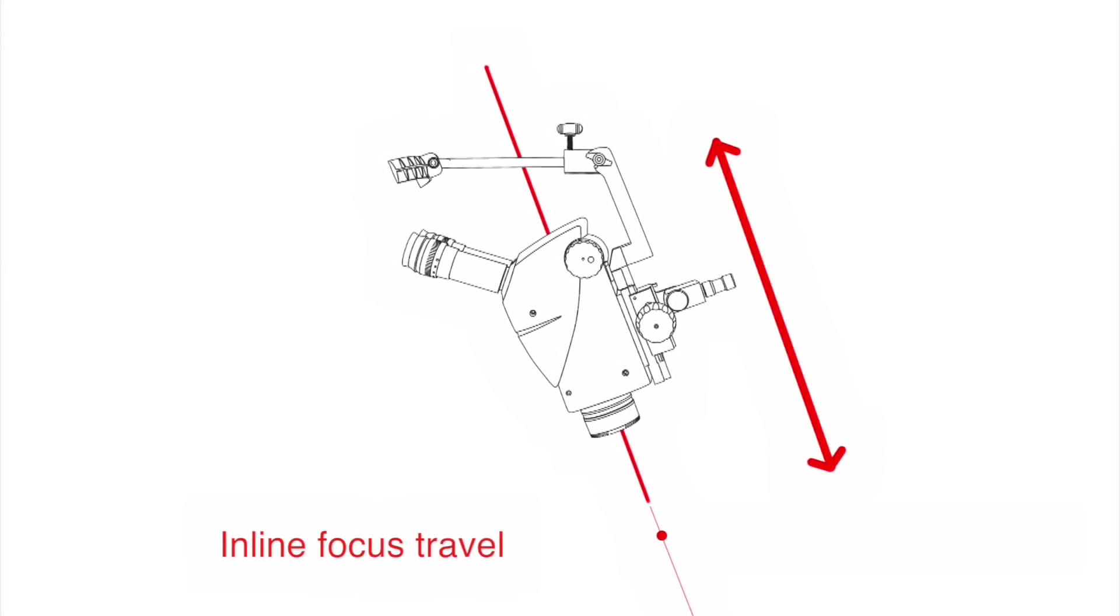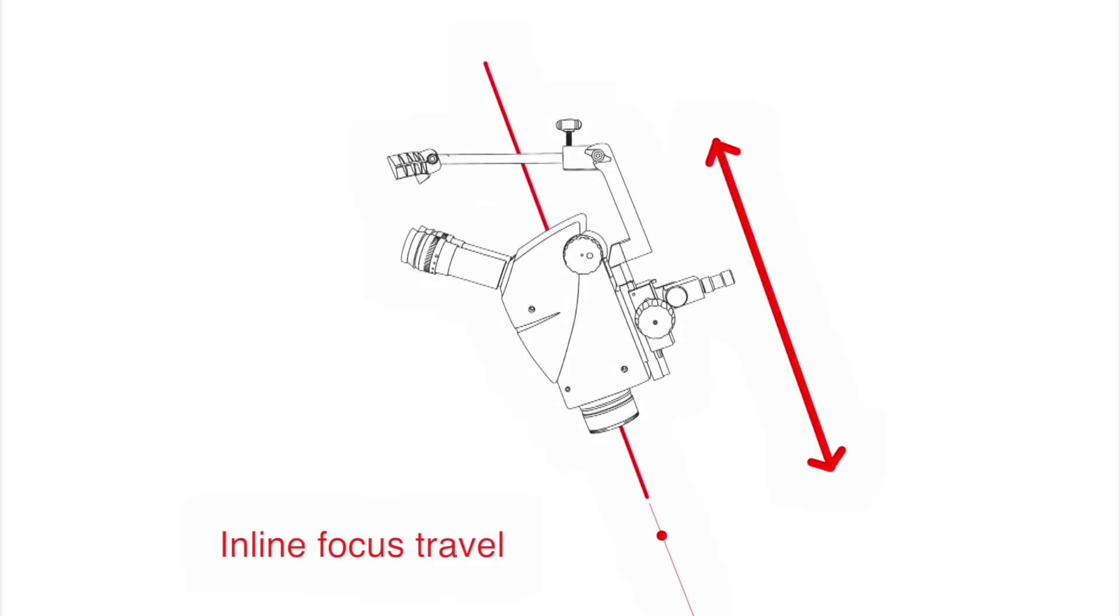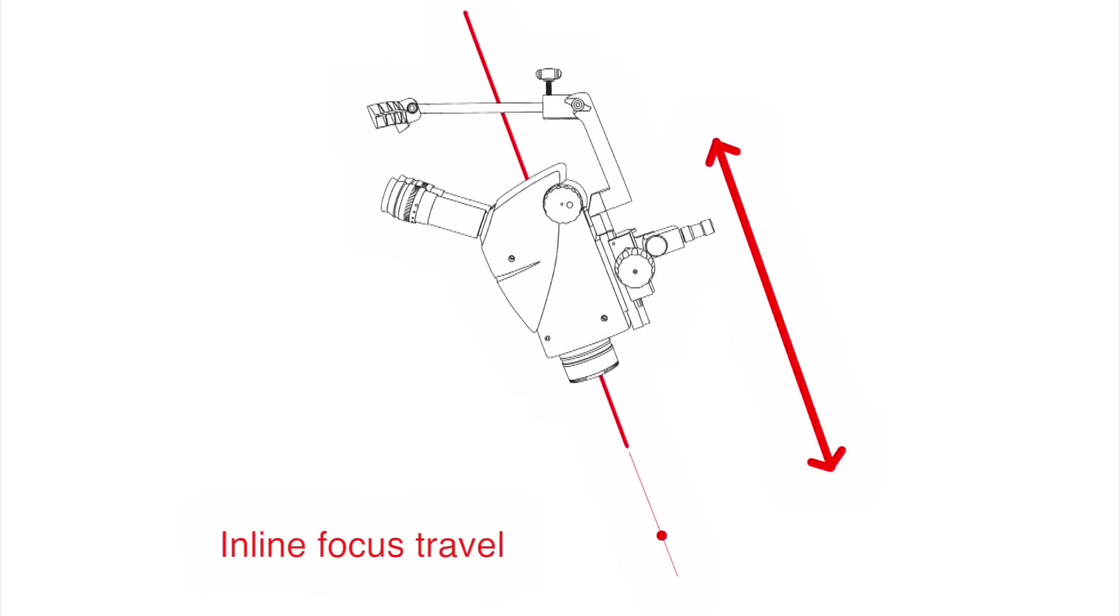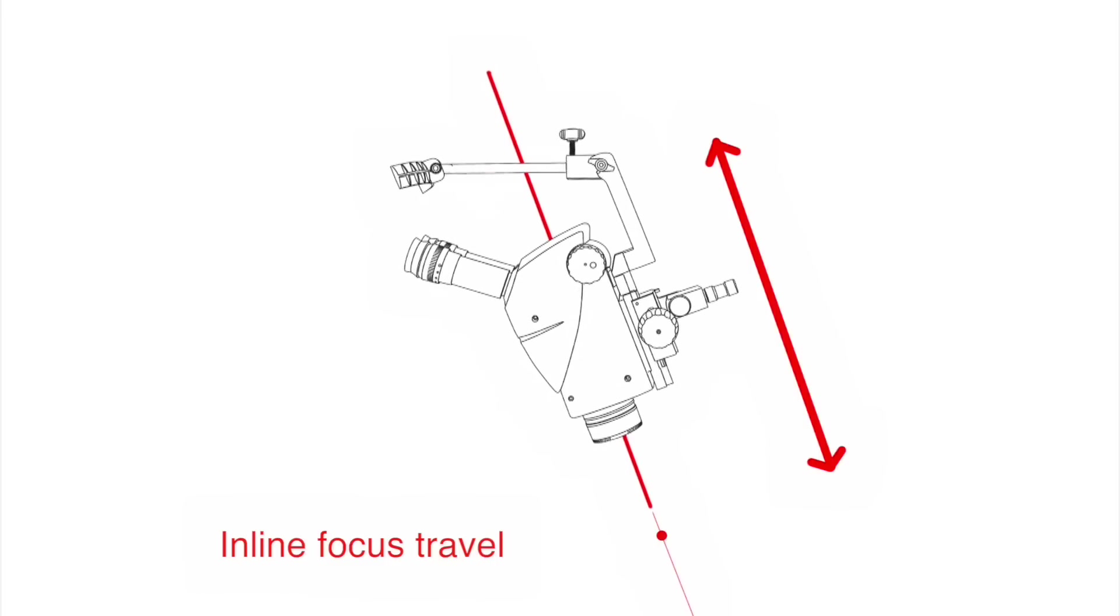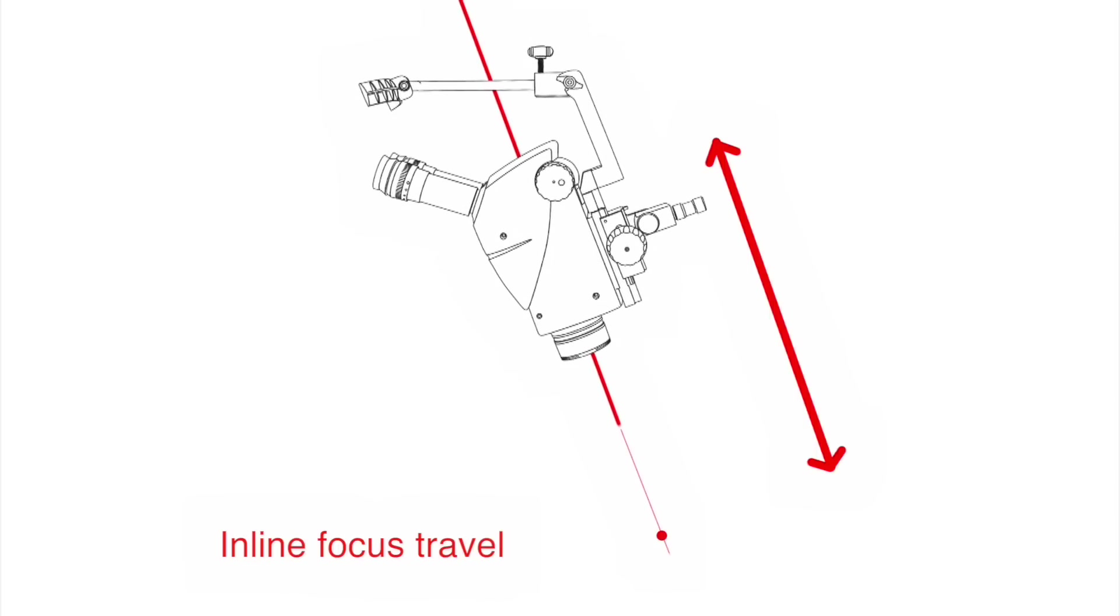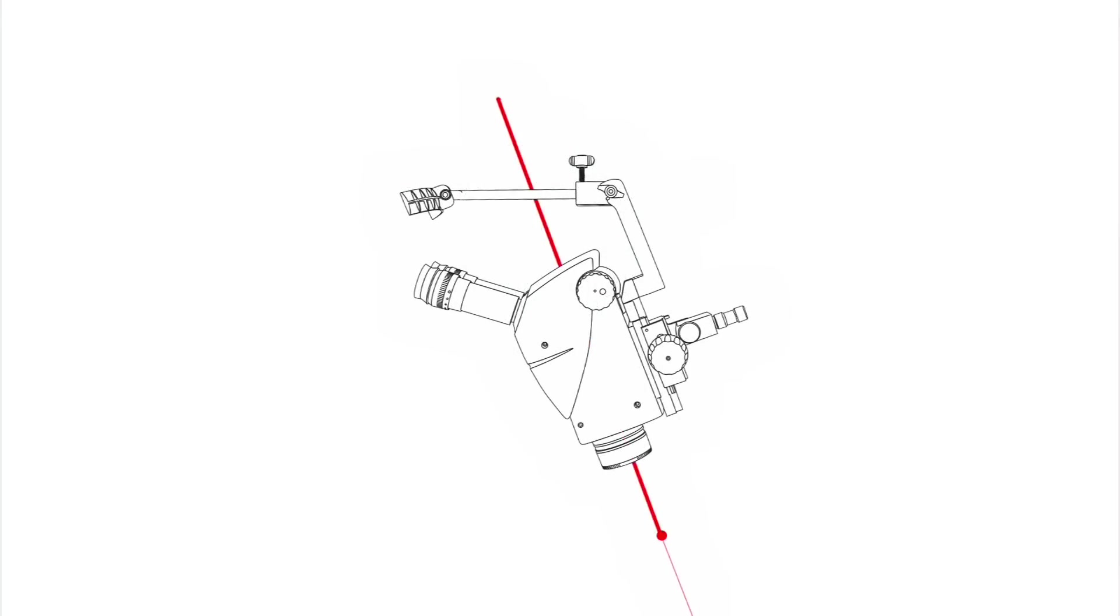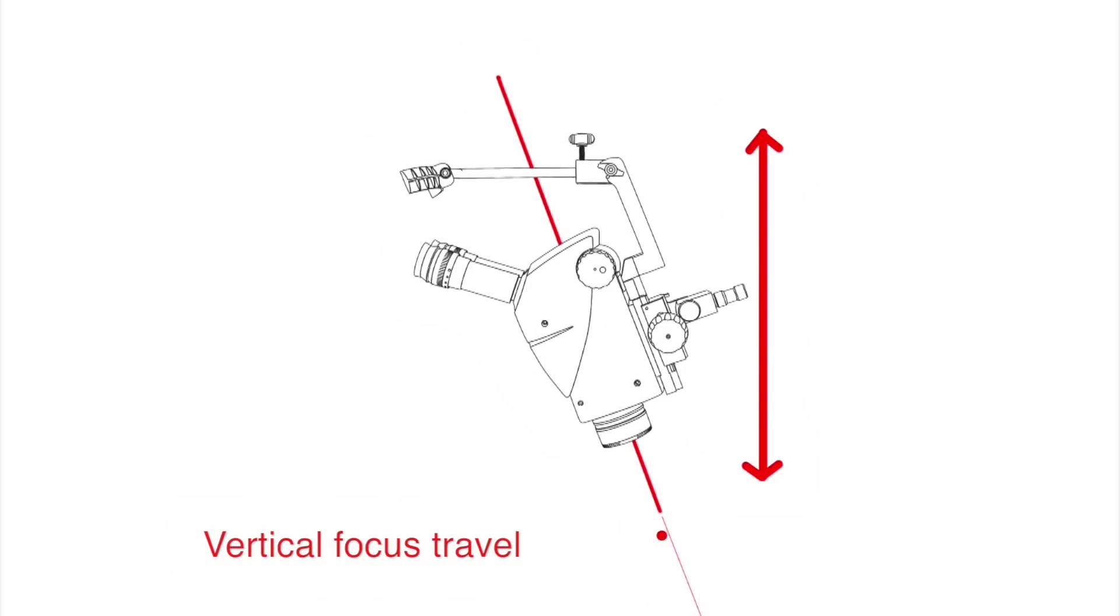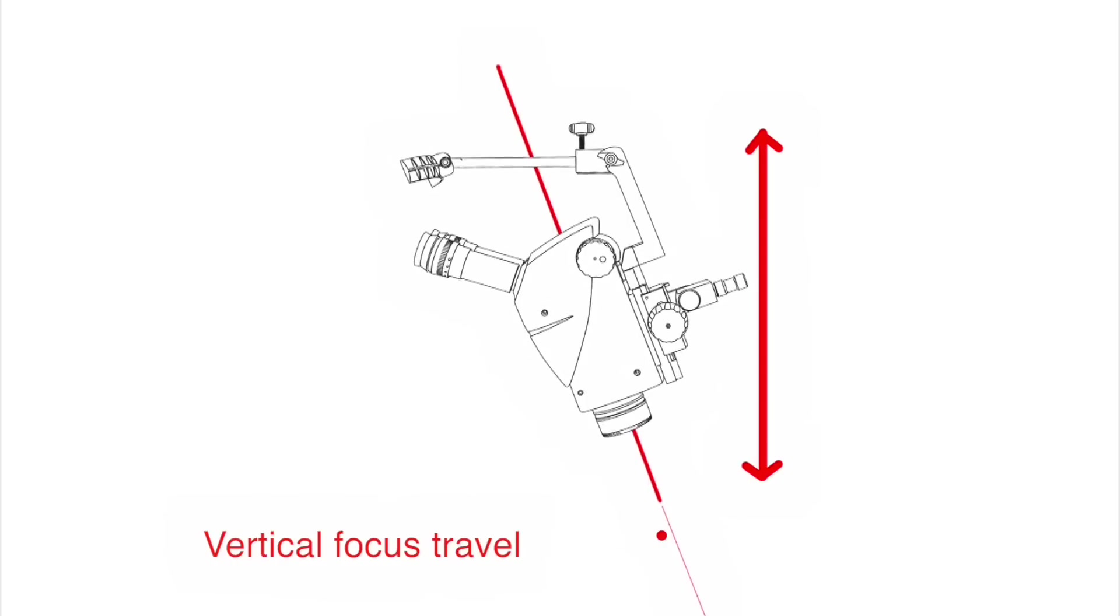Here's an illustration that will make it easier to understand the benefit of having the focus travel in line with the tilt of the microscope. Assuming you've centered your scope properly, when focus travel is in line with the tilt of the scope, the center of vice rotation stays centered as you focus. If the scope is tilted and the focus travel is straight up and down, like the classic Acrobat stand, it can shift off-center as the scope is raised or lowered and is most noticeable at higher magnifications.